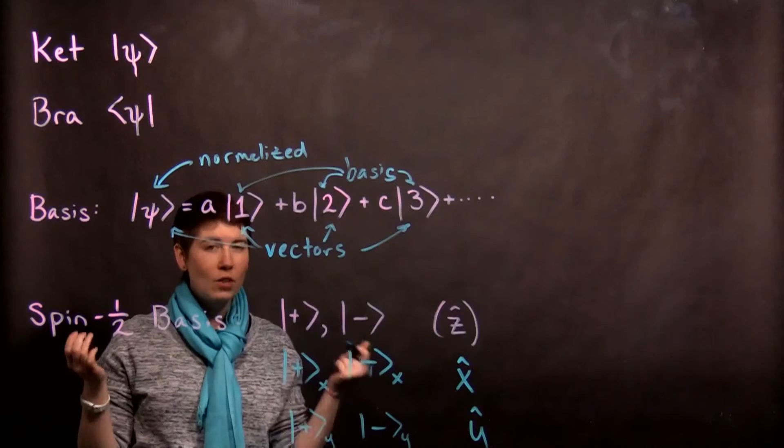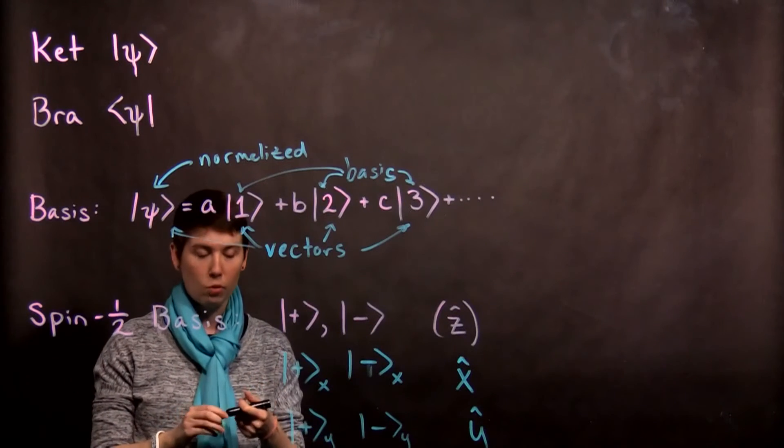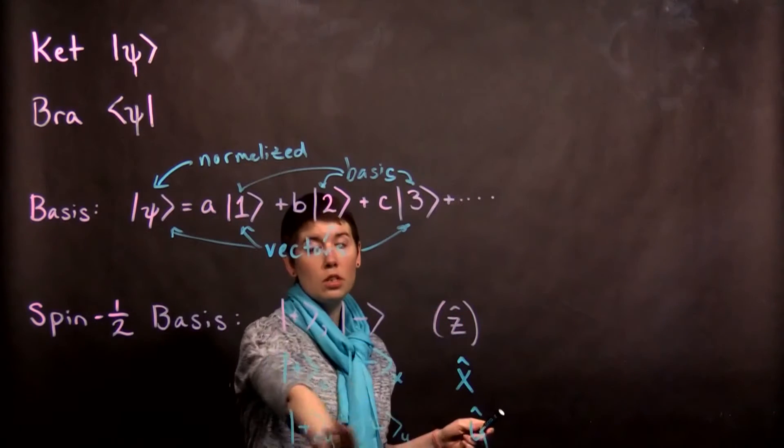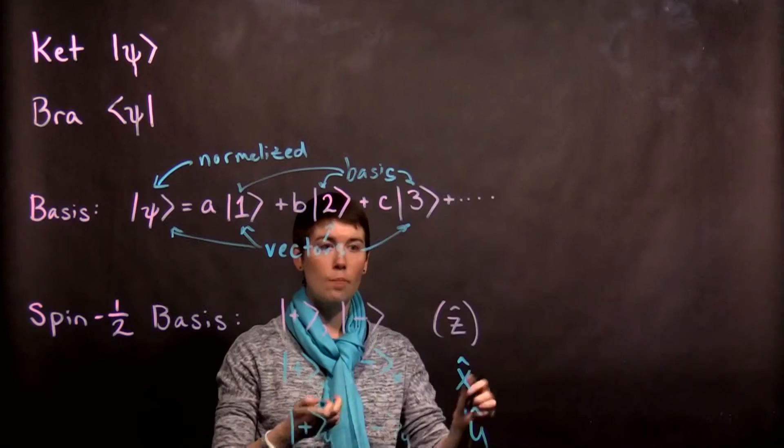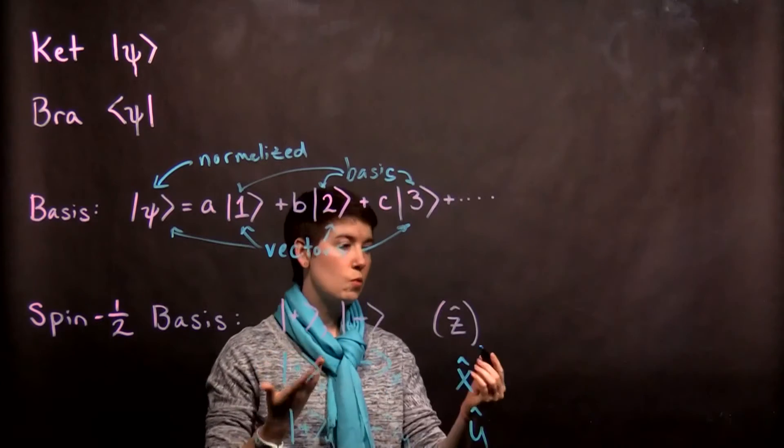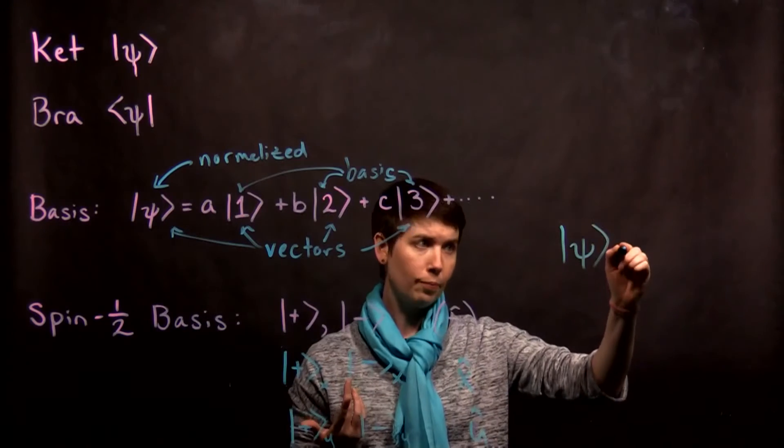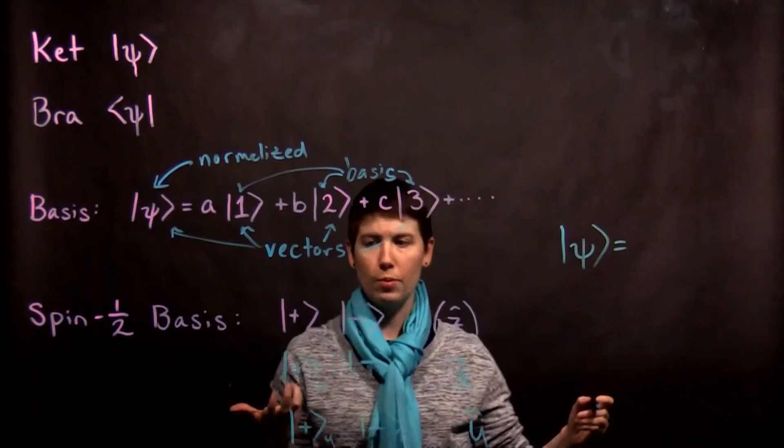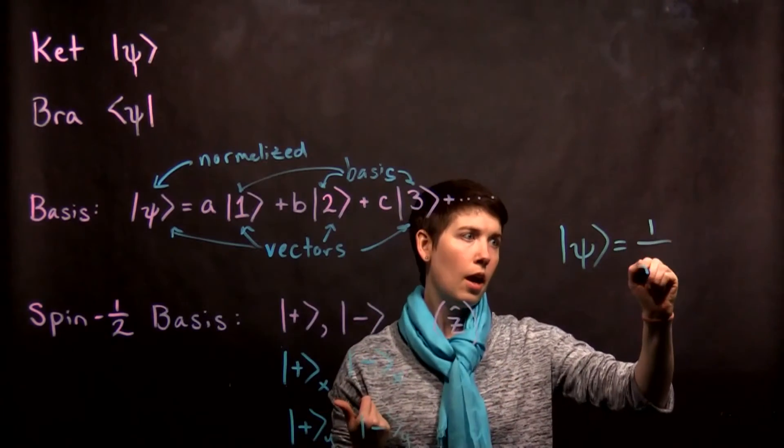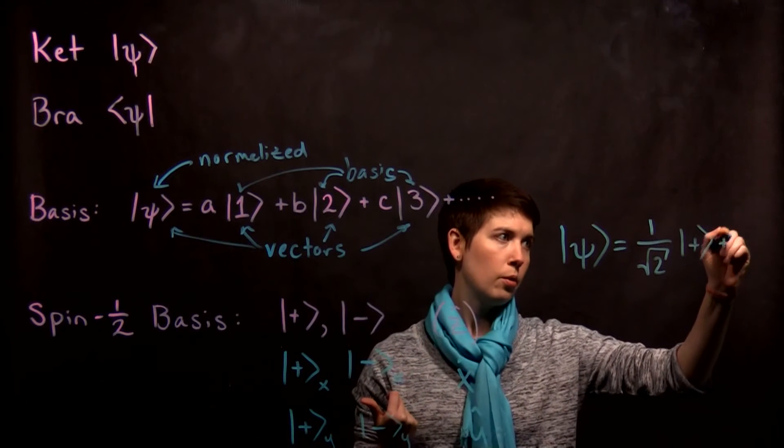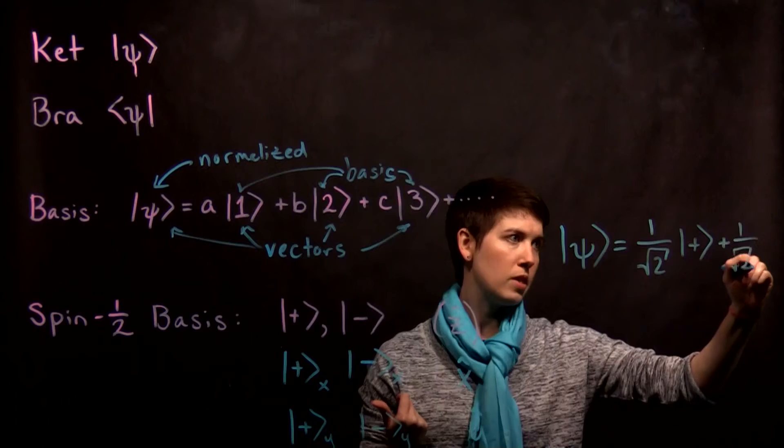So, so far we haven't actually done anything. But again, we're going to be expressing states in terms of these basis vectors. So for instance, what that means is that when you have any sort of spin state, that could be, for instance, written as a superposition of spin up and spin down.